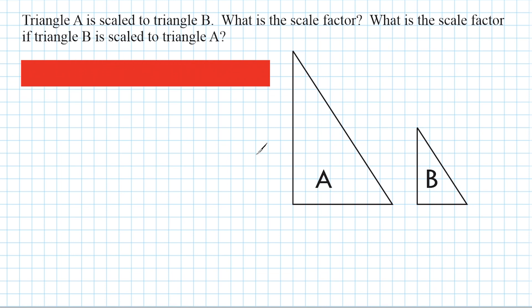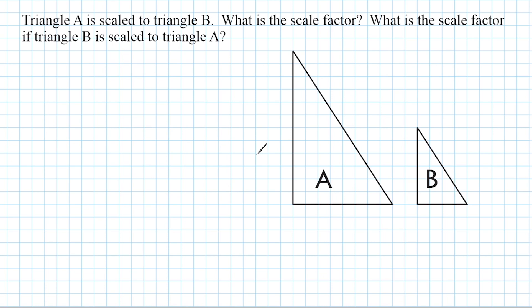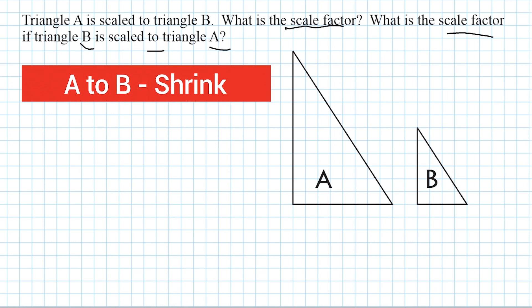This problem means that triangle A is scaled to triangle B, and we have to determine the scale factor. It also says we have to determine the scale factor when B is scaled to A. So if we start with A and we go to B, we can see that we are shrinking A to get to B.